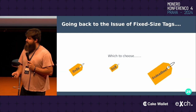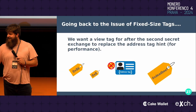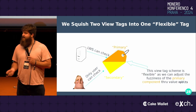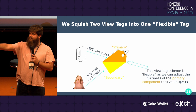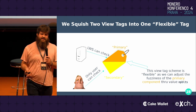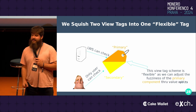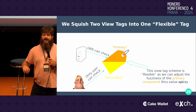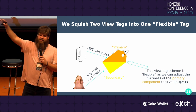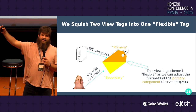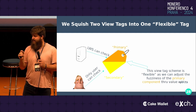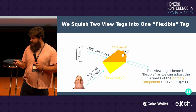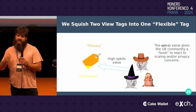You might be asking why there are two view tags now. We want a view tag after the second secret exchange to replace the address tag hint for performance. What we can do is actually mix these two — take a mixture of the first one and the second one — and this gives us some flexibility, which is where the term 'flexible' comes in. We can have a sort of degree of fuzziness in how we want to mix and match these two. This is controlled by what we call NP bits.